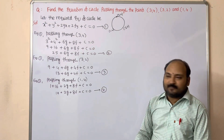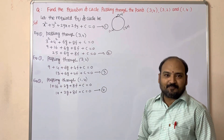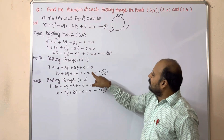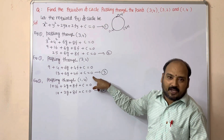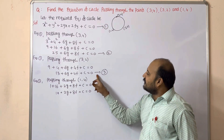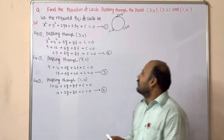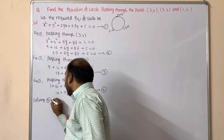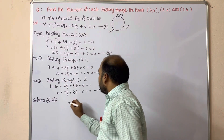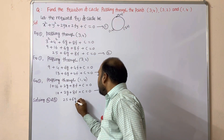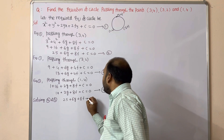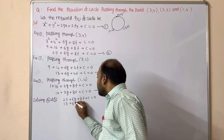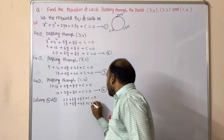In the next step, we eliminate c from Equation 2 and Equation 3, then eliminate c from Equation 3 and Equation 4. Solving Equation 2 and Equation 3: Equation 2 is 25 + 6g + 8f + c = 0, and Equation 3 is 13 + 6g + 4f + c = 0.